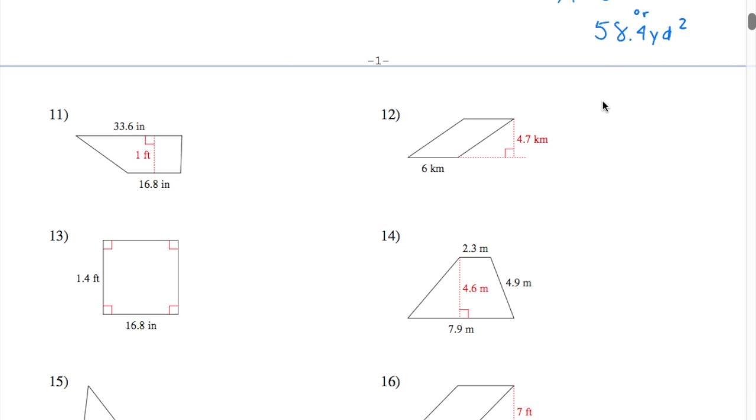The last example we have to look at is a parallelogram. And this is a nice, easy formula. Area equals base times height, but don't be confused. It's not like this slanted distance here, maybe 8 or something like that. It's the perpendicular base times its height. So 6 times 4.7 is going to give us 28.2 kilometers squared.